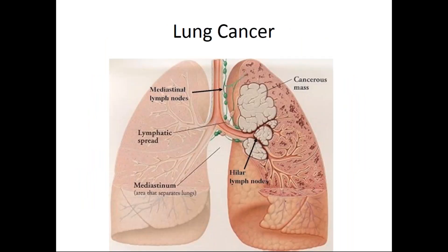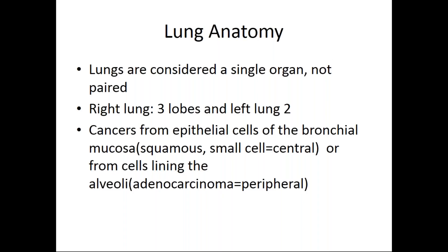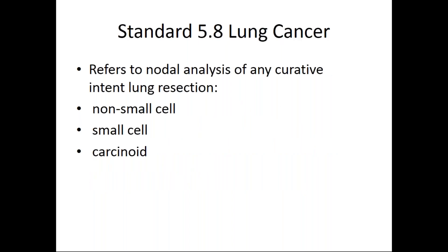Lung cancer is the next standard. The pathology report will help determine whether the standard was met. The right lung has three lobes and the left has two; cancers can arise from other cells or from cells lining the alveoli. Standard 5.8 refers to nodal analysis of any curative-intent lung resection for non-small cell, small cell, and carcinoid. Because of lung screening programs, we are able to catch small cancers much earlier.